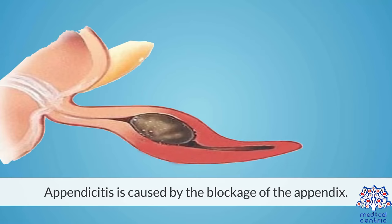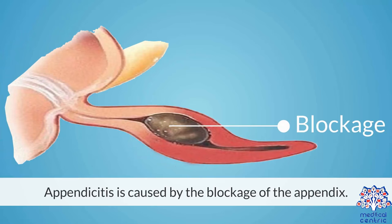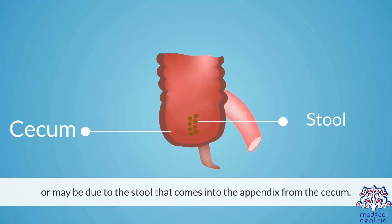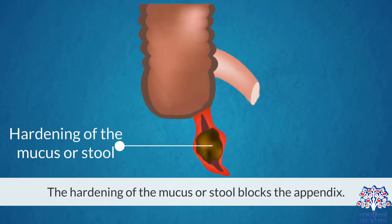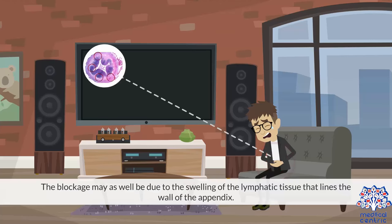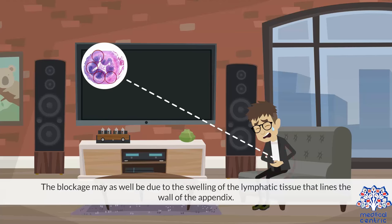Causes. Appendicitis is caused by the blockage of the appendix. The blockage may be as a result of thick mucus that builds up within the appendix, or may be due to stool that enters the appendix from the cecum. The hardening of the mucus or stool blocks the appendix. The blockage may also be due to the swelling of the lymphatic tissue that lines the wall of the appendix.